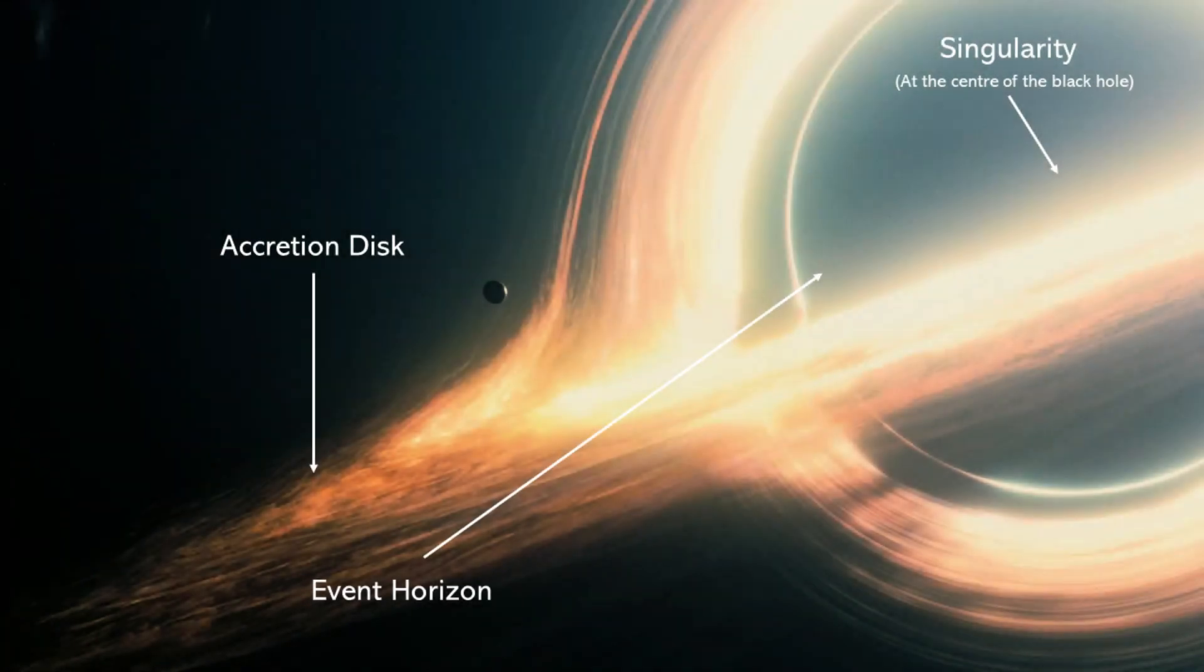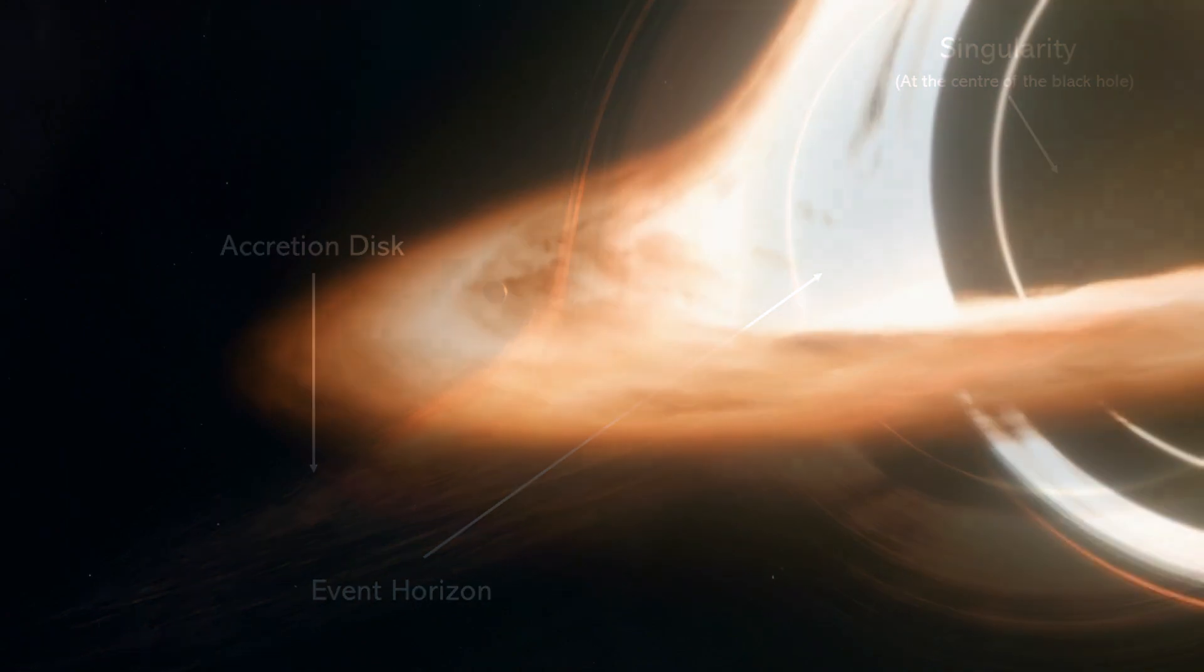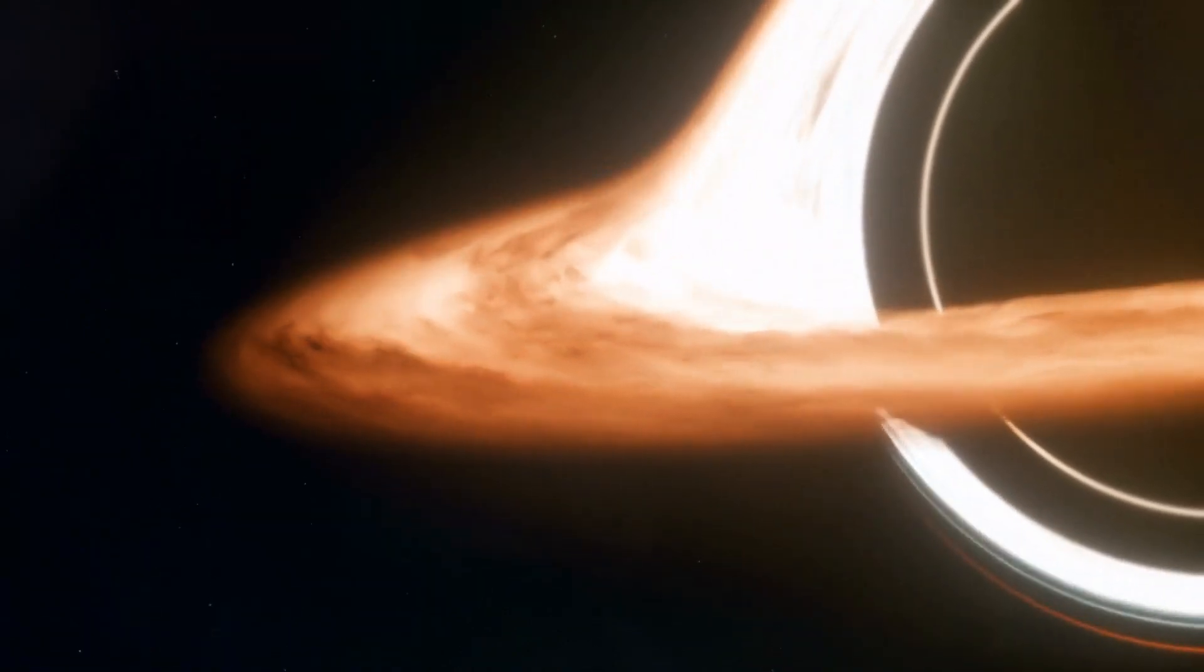An accretion disk is another crucial component associated with many black holes and other astrophysical objects, such as neutron stars and young stellar systems. It is a flattened, rotating disk of gas, dust, and other matter that spirals inwards toward the central black hole due to gravitational attraction.